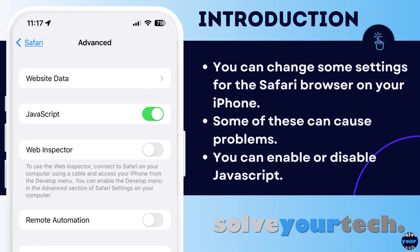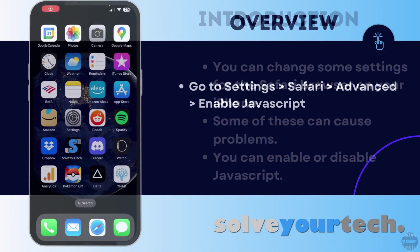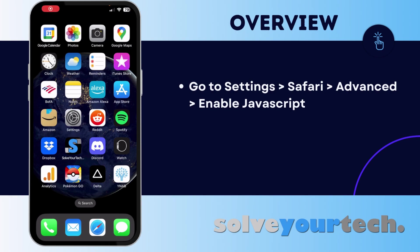So let's jump into the overview of how to enable JavaScript on an iPhone. If you change some of the Safari settings on your iPhone, you may not notice much of a difference, but there are a few that can have a big impact on the way that you browse the web. One of these is the JavaScript setting. If you've previously turned off JavaScript and you find that a lot of the web pages you visit aren't working properly, then you might want to turn it back on.